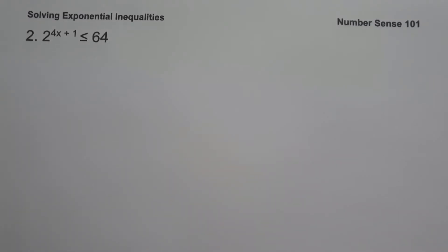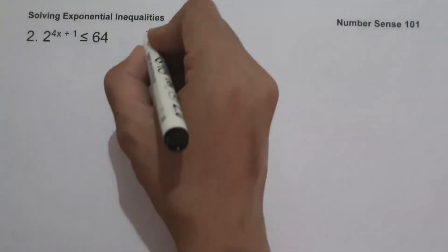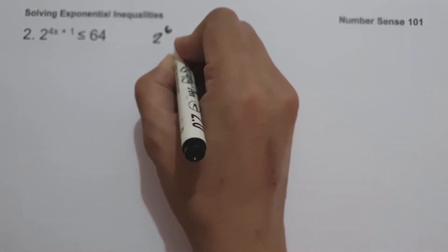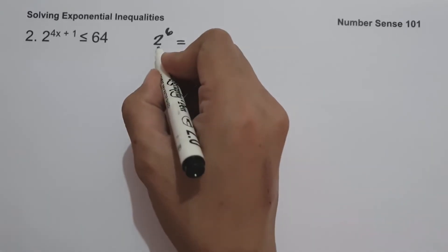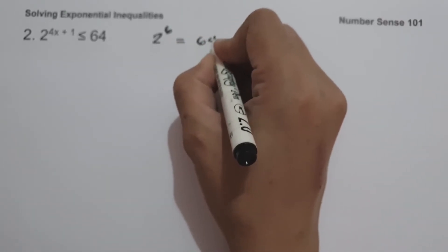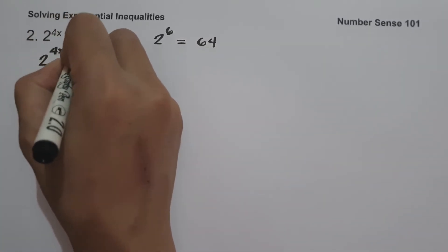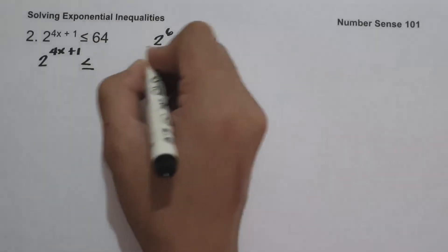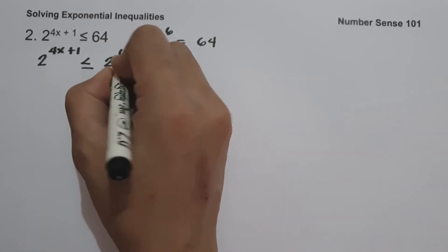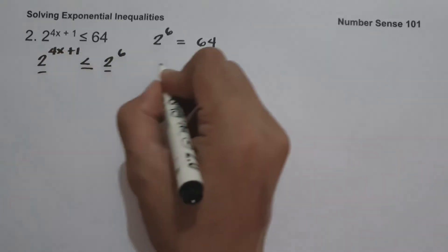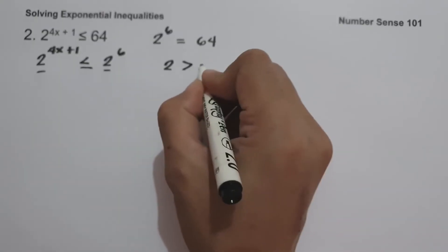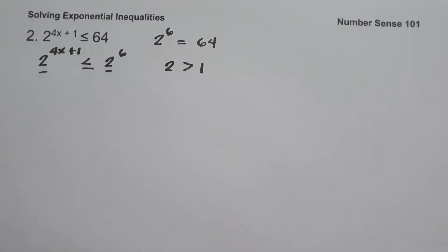On example number 2, we have 2 raised to 4x plus 1 less than or equal to 64. To solve for x, we must have the same base, so let us write 64 as 2 raised to 6, since multiplying 2 by itself 6 times gives 64. So we have 2 raised to 4x plus 1 less than or equal to 2 raised to 6. Since the base 2 is greater than 1, the direction of the inequality is retained.